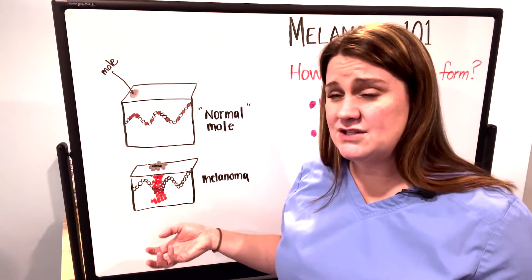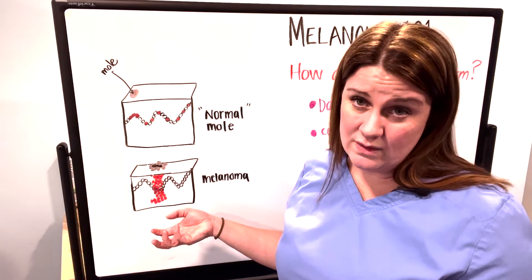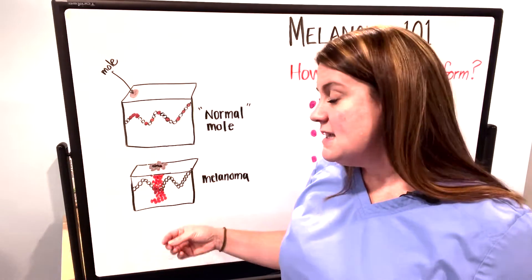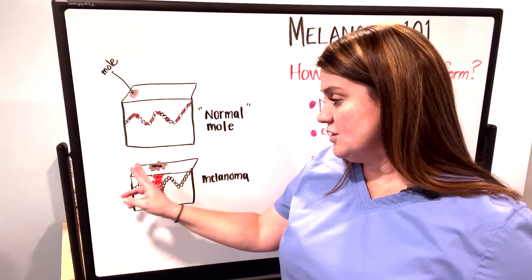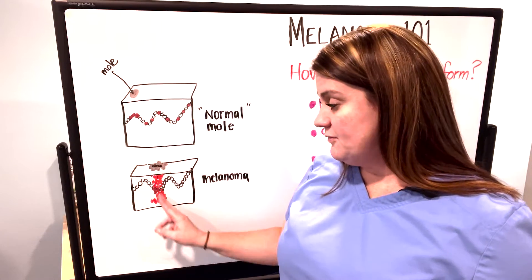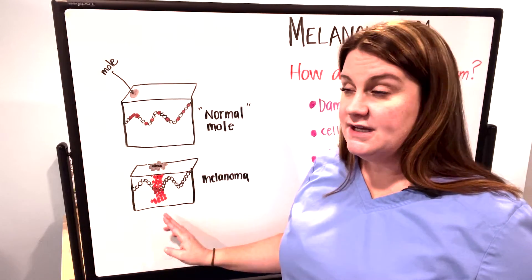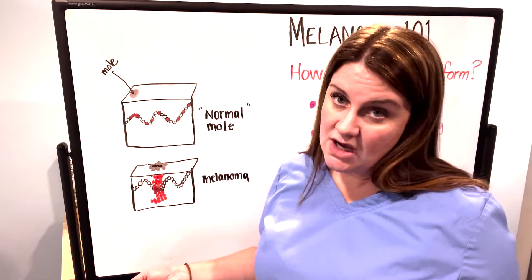It will sometimes cause ulceration on the skin because that part of the mole is dying from inadequate blood supply. Melanomas by and large will grow out before they grow down looking for blood.